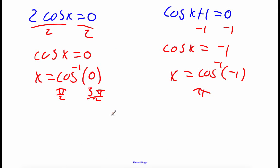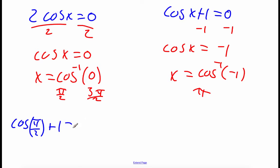Now we said earlier that when we square both sides we could introduce extraneous solutions, so we need to check all of our answers by plugging them back into our original equation. Starting with pi over 2: cosine of pi over 2 plus 1 equals sine of pi over 2. Cosine of pi over 2 is 0 and sine of pi over 2 is 1, so the left-hand side gives us 1 and the right-hand side is 1. So pi over 2 works.